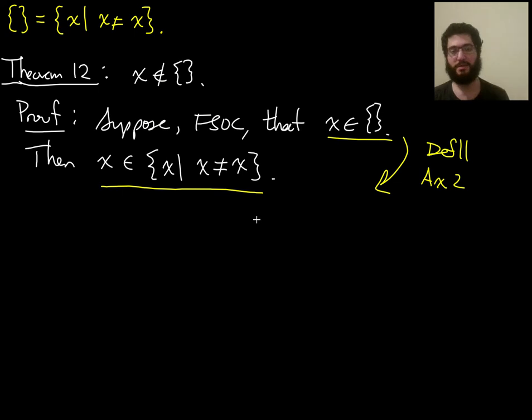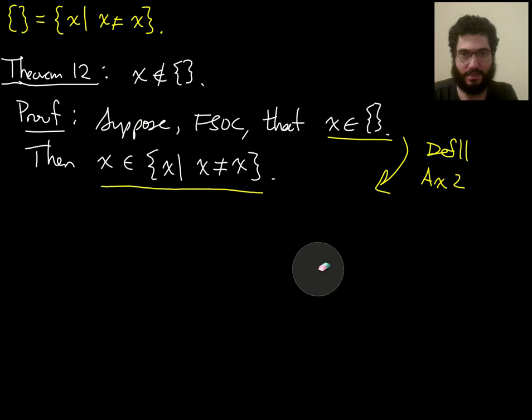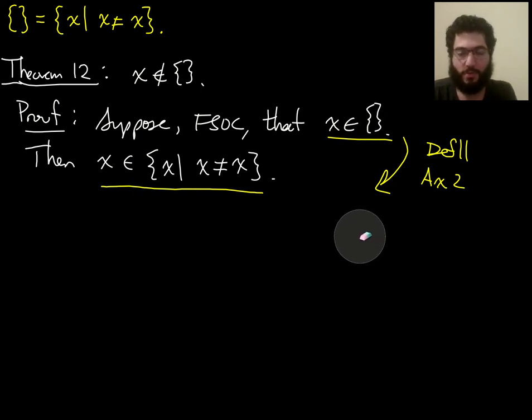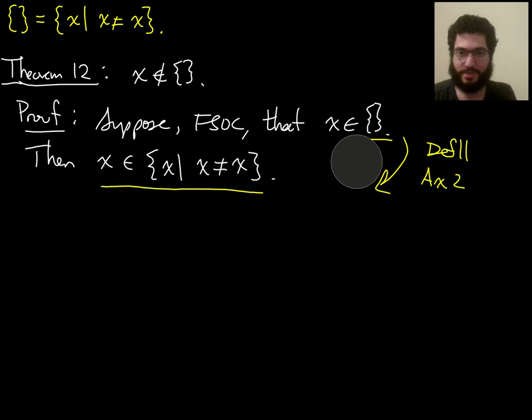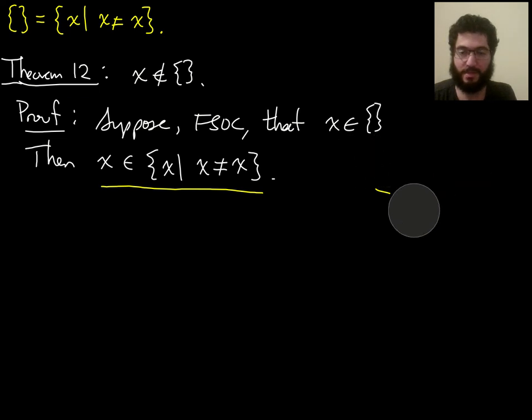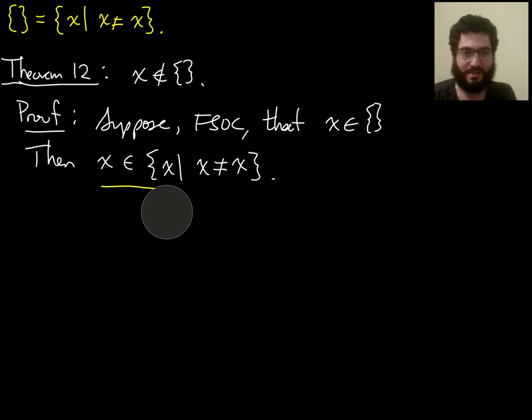So you see all the formal machinery that ran in the background just to go from here to here to make this deduction. You don't have to show all those details for axiom 2. For most things, I do want you to show as much detail as you can. But axiom 2, we're going to treat as sort of such a commonplace, something that we're going to use so frequently, that we will suffer if we show all the details every time.